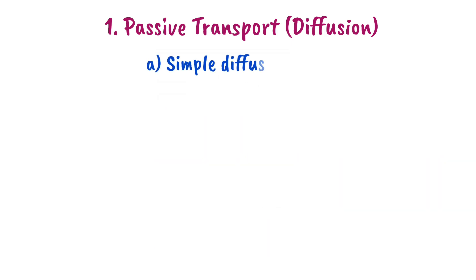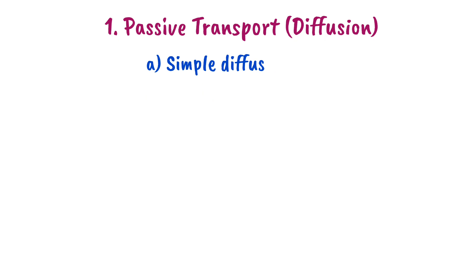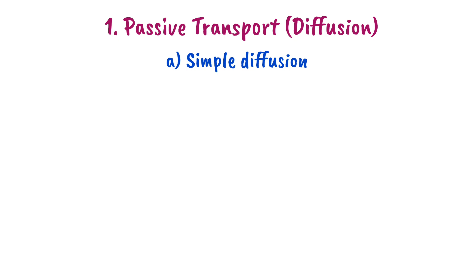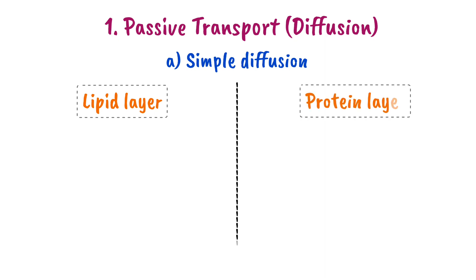The two forms of passive transport are Simple Diffusion and Facilitated Diffusion. Simple Diffusion occurs through the Lipid Layer, and also through the Protein Layer.